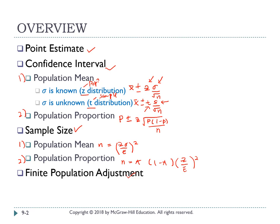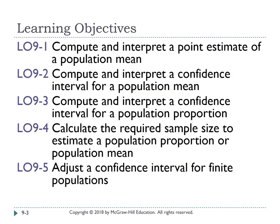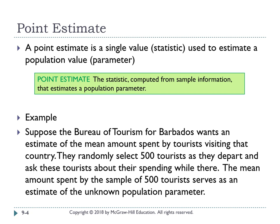In this chapter, you will learn how to compute and interpret point estimates and confidence intervals for population mean and population proportion. You should also be able to compute the sample size to estimate your population proportion or population mean, and lastly, to adjust a confidence interval for a finite population. A point estimate is a single value or statistic used to estimate a population parameter — in simple terms, it is your sample mean x-bar used to estimate mu.